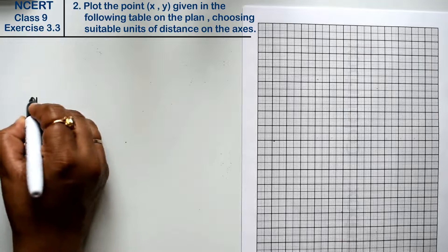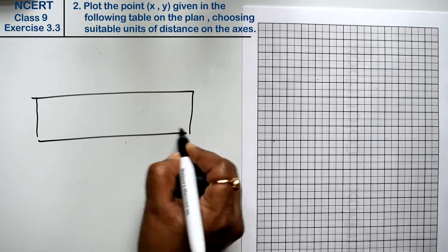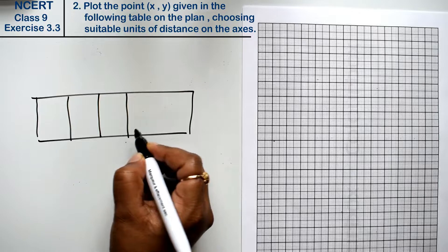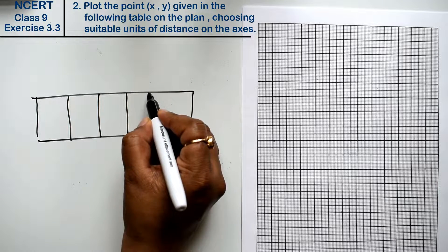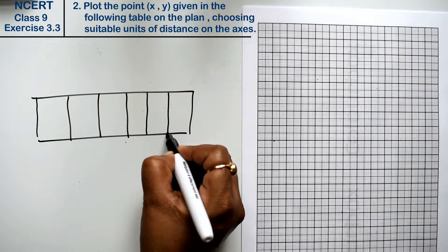Friends, we have a table. We have to plot this graph, right friends? 1, 2, 3, 4, 5 points. 3, 4, and 5.